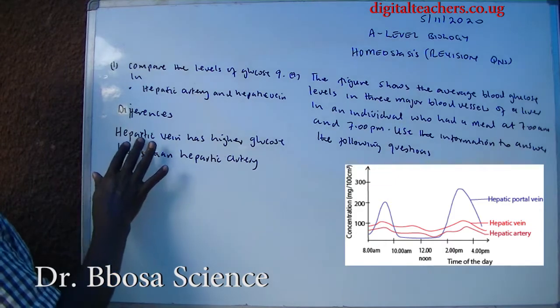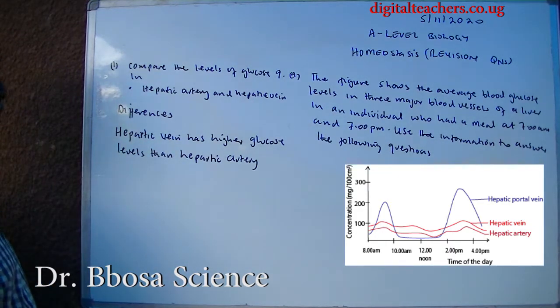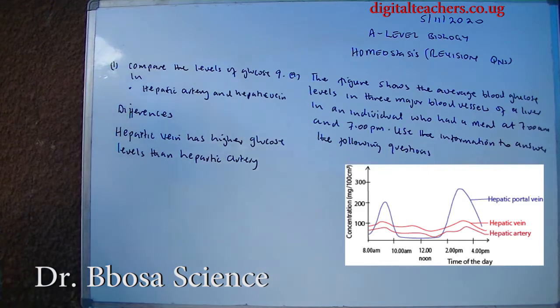Differences: the hepatic vein has higher glucose levels than the hepatic artery.